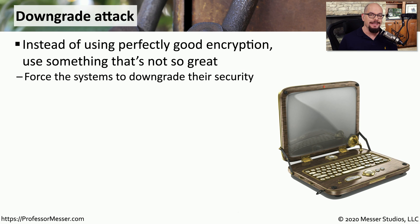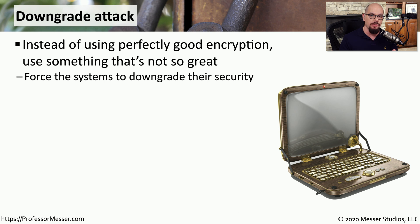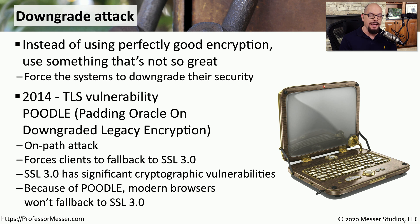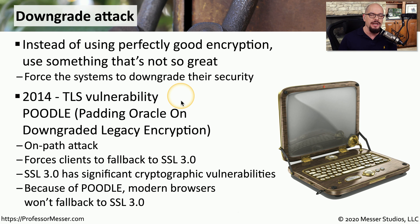Another type of attack is a downgrade attack. Normally, when you want to communicate securely to another device, there's an initial conversation where both sides determine the best possible encryption algorithm. If you're able to sit in the middle and influence that conversation, you could have the two sides downgrade to a type of encryption that might be very easy to break. A popular example occurred in 2014, when researchers found a vulnerability in Transport Layer Security — the successor to SSL, or Secure Sockets Layer, the encryption mechanism we use to communicate with web servers.